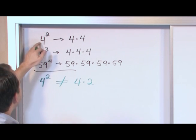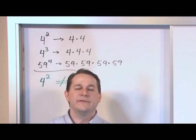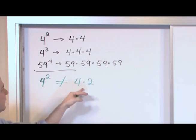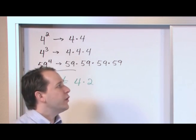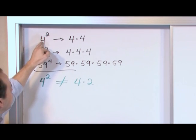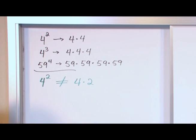Because we already said that four squared is equal to four times four. Four times four is sixteen. Four times two is eight. So you can see that these two things are not equal. So you definitely don't just multiply by the exponent and you're done. What you're doing is you're multiplying the bottom number here by itself as many times as indicated by the number up there.